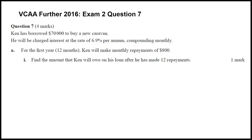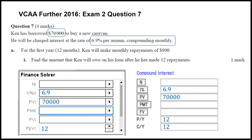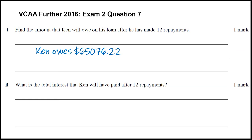For the first question it's a reasonably straightforward finance solver question. He's borrowing $70,000 so that will be our principal value - he's borrowing it so it's a positive value. The interest rate is 6.9%, it's a monthly interest rate so that's 12 times per year. He's making repayments of $800, which is negative because he's paying that to the bank. We want to find out how much he owes after 12 repayments, so we're looking for our final value. Click solve and it comes out negative because he still owes that money, but when we answer the question we say he owes $65,076.22.